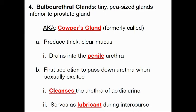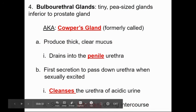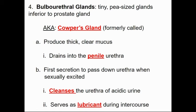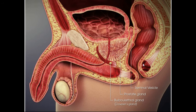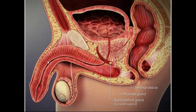The bulbourethral glands — also called Cowper's glands — are about the size of a pea and are inferior to the prostate gland. They produce a thick, clear mucus that drains into the penile urethra. This is the first secretion to exit the penis when sexually excited; its function is to cleanse the urethra of any acidity left from urine, and it also acts as a lubricant during intercourse.